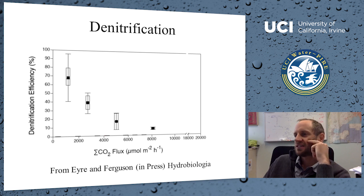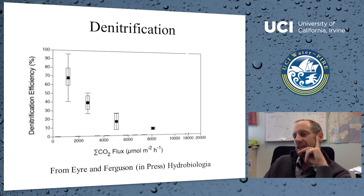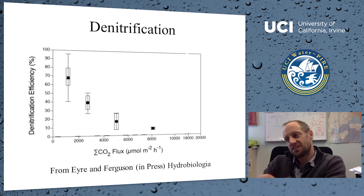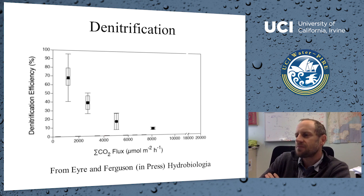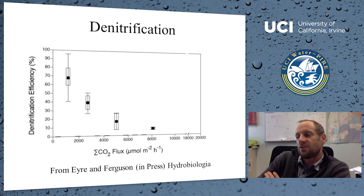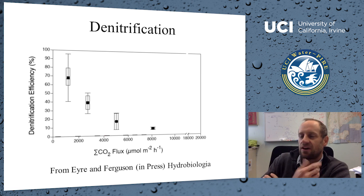Here is a plot of denitrification efficiency versus the DIC or CO₂ flux from the sediment, which is a proxy for how much organic matter is entering. The key point is that we move from a denitrification efficiency of around 70% down to very low efficiencies as more and more organic matter reaches the sediment — that is, as the system becomes more eutrophic.